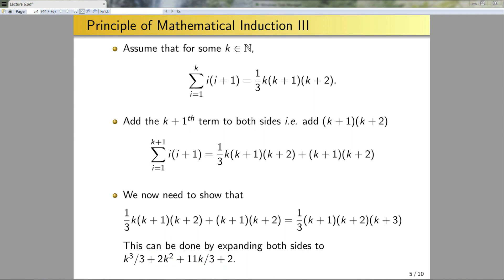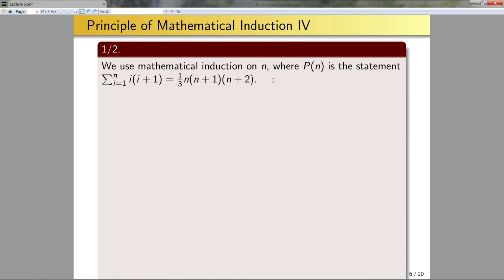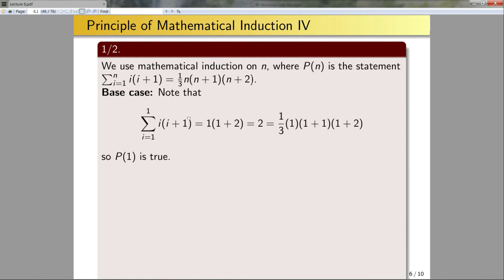Now let's give the formal proof and go through all the structural details I want you to use. We use mathematical induction on n, where P(n) is the statement that the sum from i = 1 to n of i(i+1) equals n(n+1)(n+2)/3. In your proof you must formally define what P(n) is. For the base case, we note that the sum from i = 1 to 1 equals 1 × 2 = 2, which equals 1 × 2 × 3 / 3 = 2. Thus P(1) is true and the base case holds.